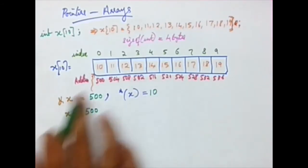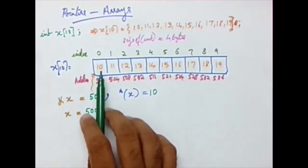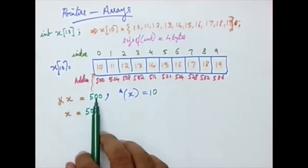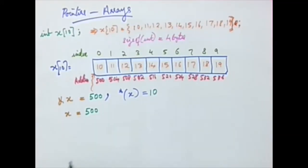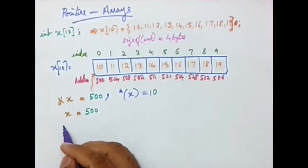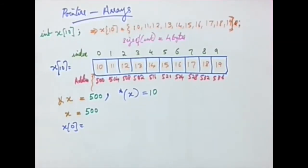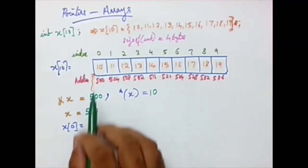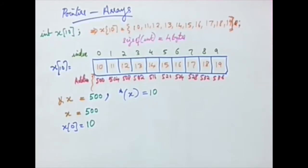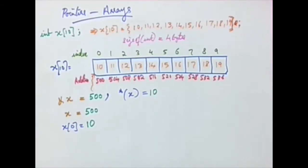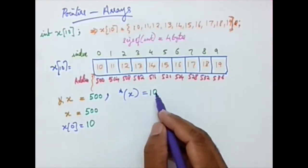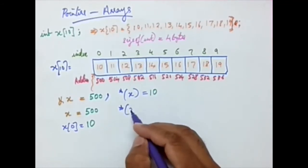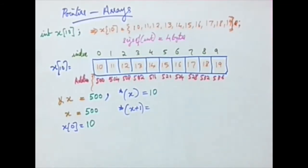So &x is 500, x is also 500 — it gives the address of the first location. And *x equals 10. Instead of *x, if I write x[0], the result is also 10, because x[0] gives the value stored at index 0. So writing x gives an address, which is basically a pointer, while writing x[0] gives the value stored in it.